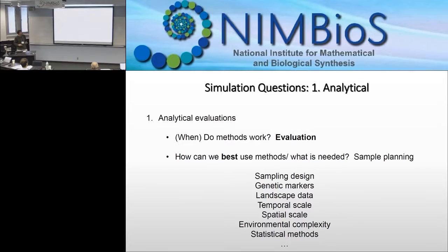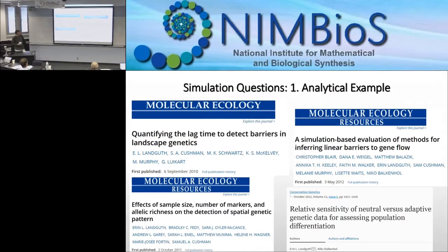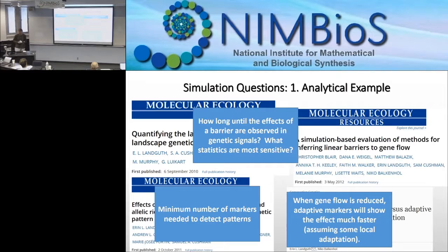Here's a set of examples of people doing this kind of work. You might ask how long until some sort of change in the environment is actually reflected in the genetics, how many markers do you really need to use, and even ask questions about how neutral and adaptive variation might differ under different demographic scenarios.